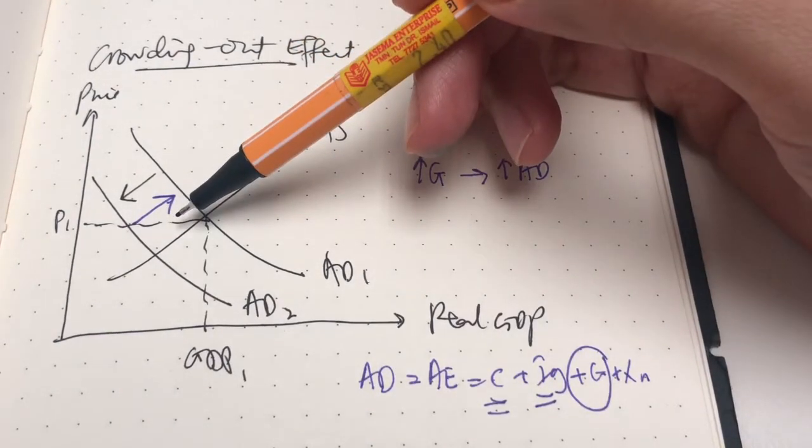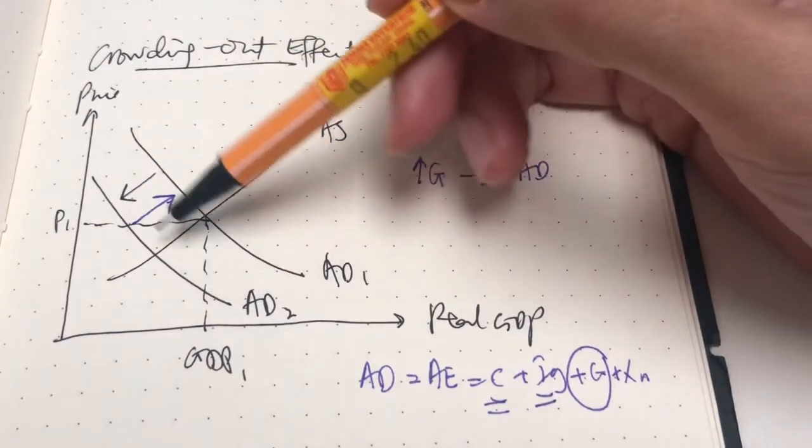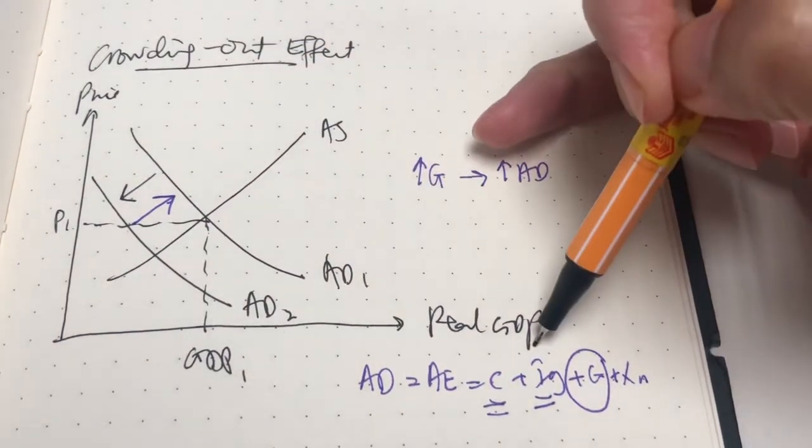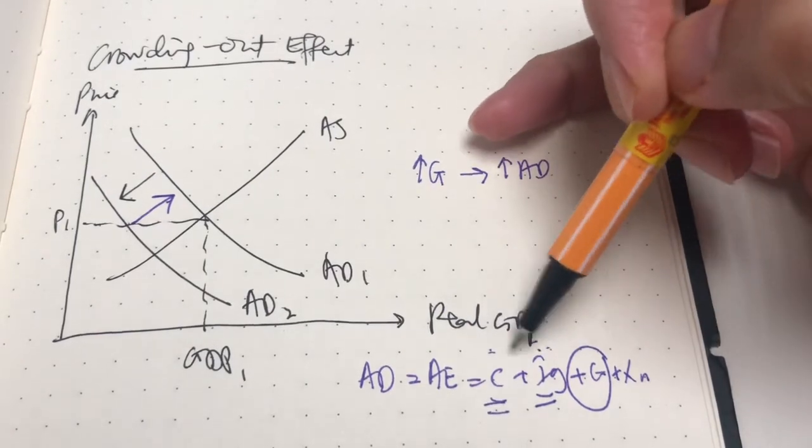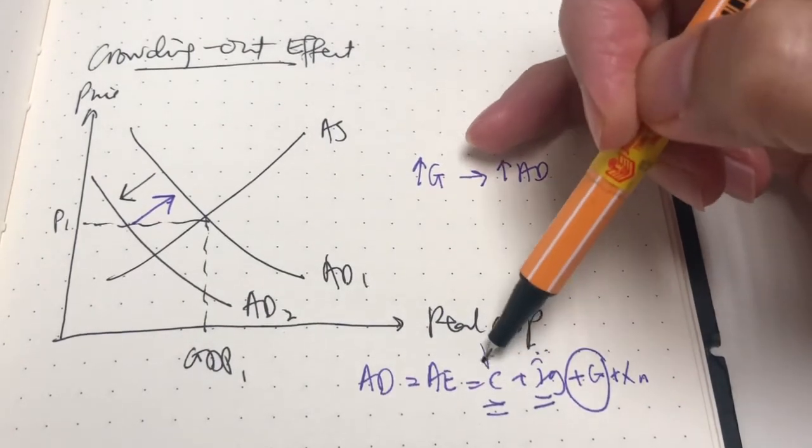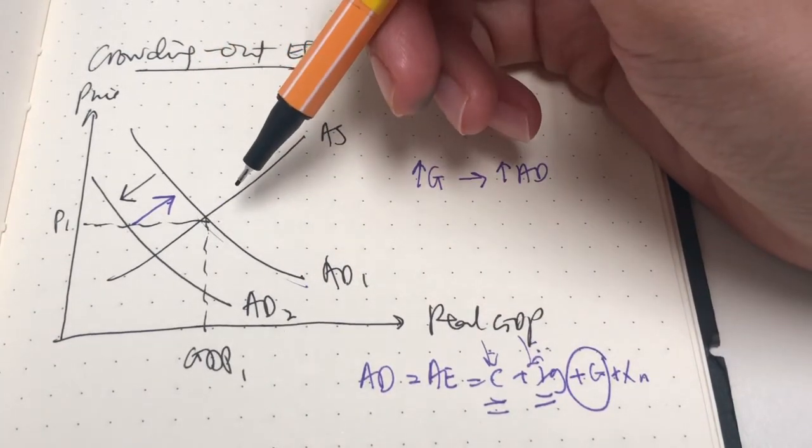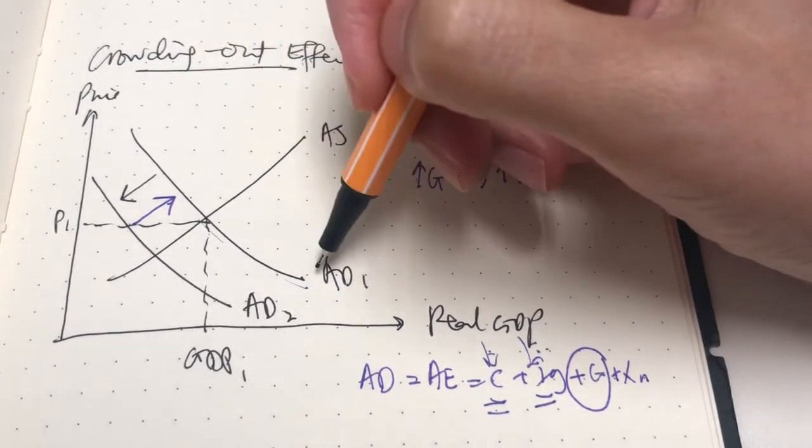What happens here is, although initially aggregate demand curve may shift back to the original, because these other components of aggregate demand fall, the effect would basically weaken the expansionary fiscal policy. AD would not be AD1.